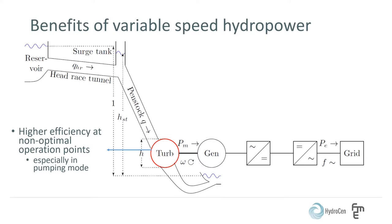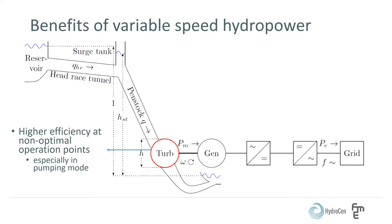The other main advantage is that the grid connected converters are able to deliver auxiliary services to the grid. Since the rotational speed can vary, the rotational energy or the kinetic energy of the turbine and generator can be utilized to deliver virtual inertia, also called synthetic inertia, by controlling the active power output to the grid. The speed and precision of the voltage control can also be improved by controlling the reactive power output.